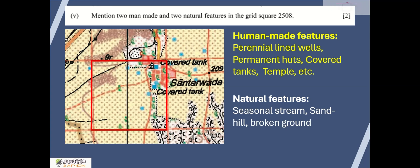Natural features include seasonal streams - two seasonal streams in the grid square. Then there is permanent sand hill towards the northwestern part of this grid square. Then there is broken ground in the southeastern part of this grid square. Any two can be written. So that's it. This is the answer for the grid square.